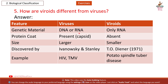Viroids vs viruses comparison: Genetic material — viruses have DNA or RNA; viroids have only RNA. Protein coat — viruses have a capsid; viroids have none. Size — viruses are larger; viroids are smaller. Discovered by — viruses: Ivanowski and Stanley; viroids: T.O. Diener, 1971. Examples — viruses: HIV, TMV; viroids: potato spindle tuber disease.